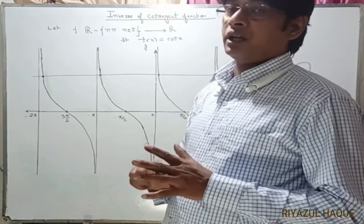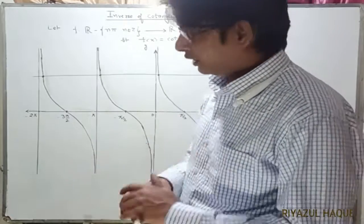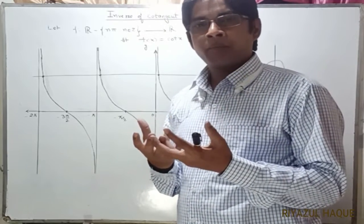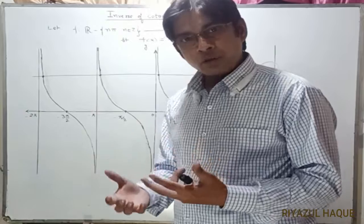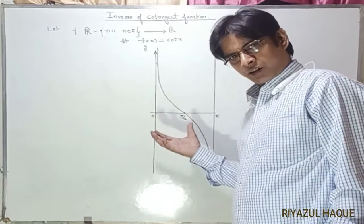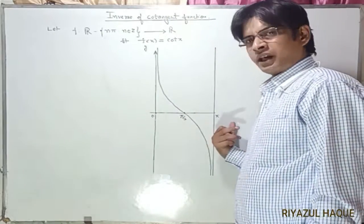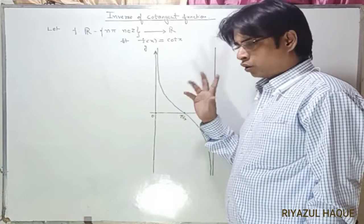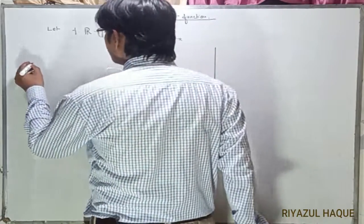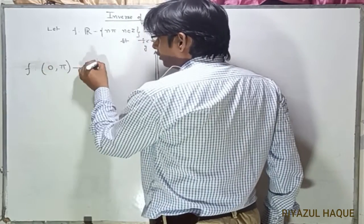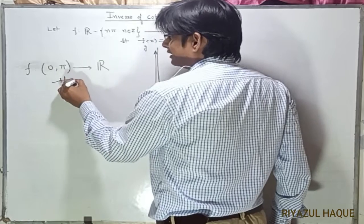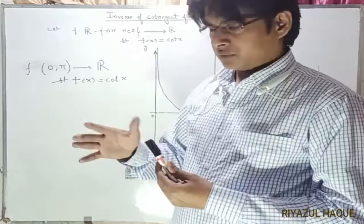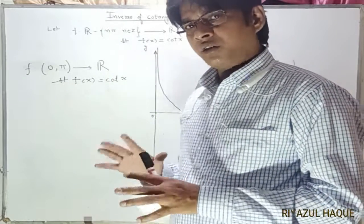This is not a bijective function, so we will create a bijective function by fixing the domain. We restrict the domain from 0 to π. With this restriction, the function becomes 1-1 and onto. So f maps (0, π) to all real numbers, such that f(x) = cot x. Since the function is now bijective, it is invertible.